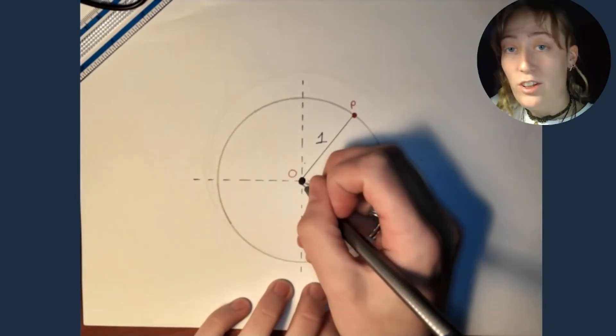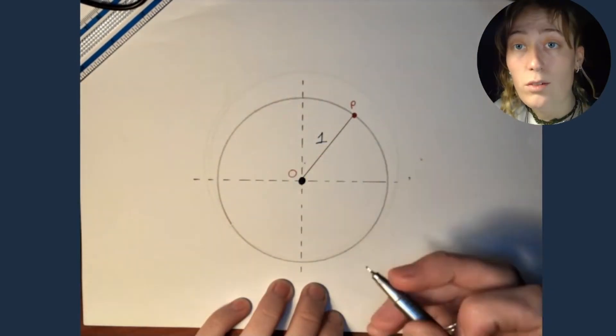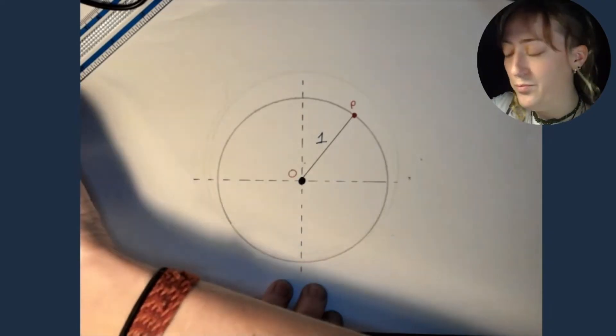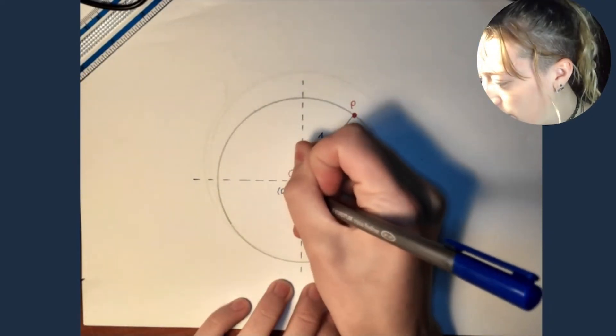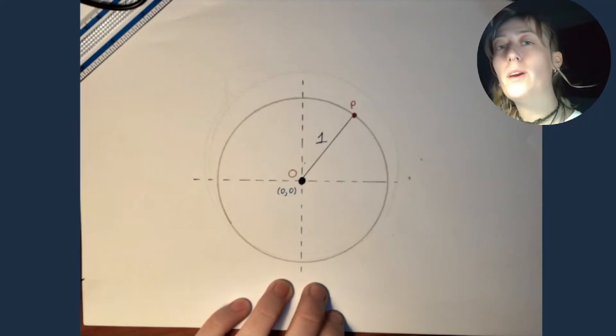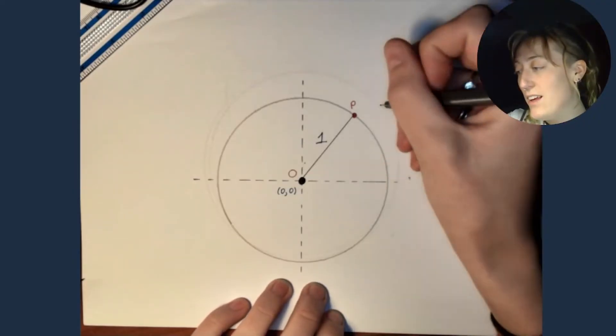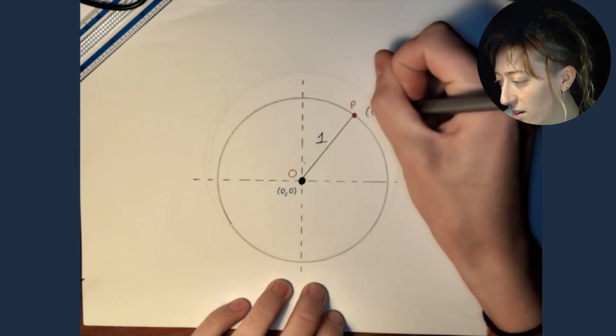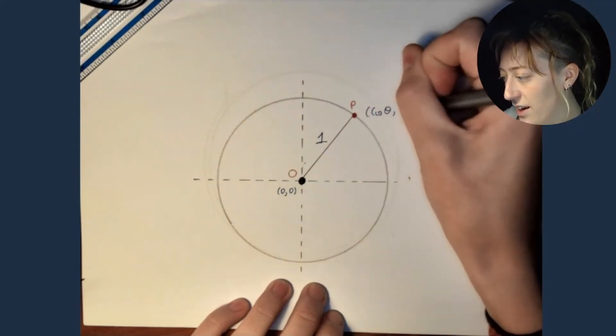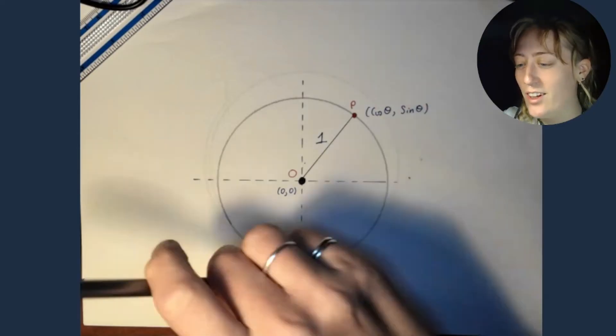Now, this is the origin. So it's the point zero, zero. So again, I could mark that in. Zero, zero. The point P, some people might have already guessed it, I'm going to mark it in as the point cos theta sine theta. I'm going to show you where this is now.